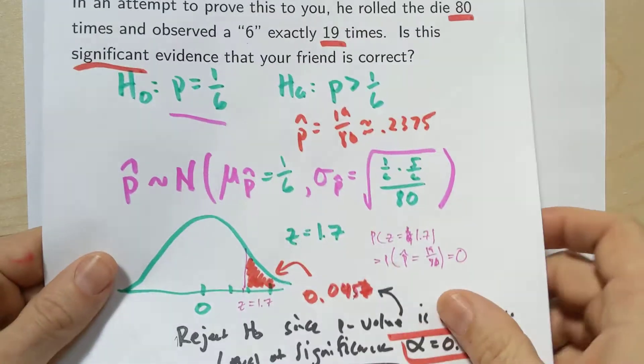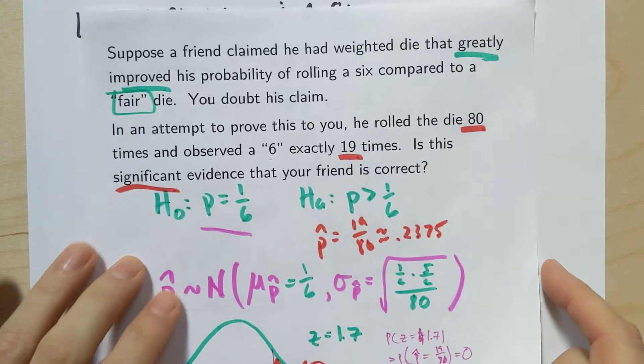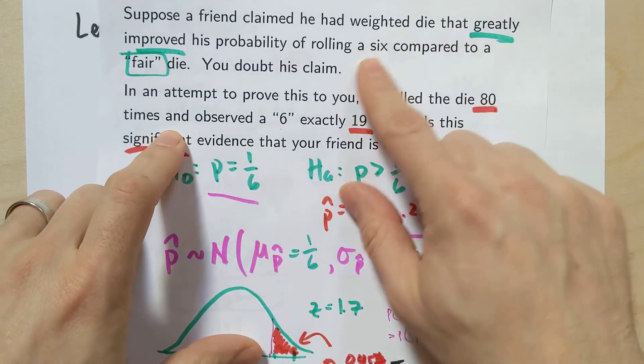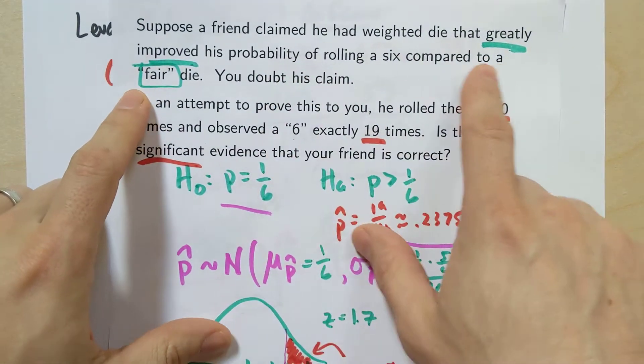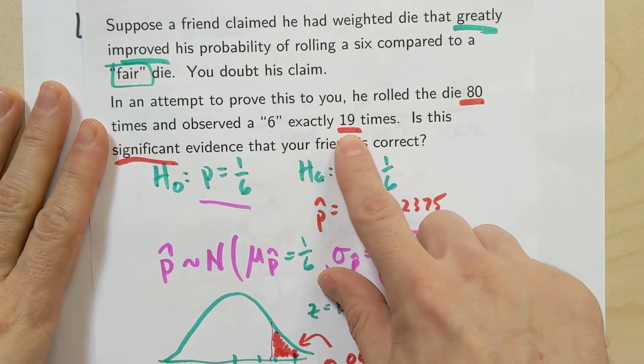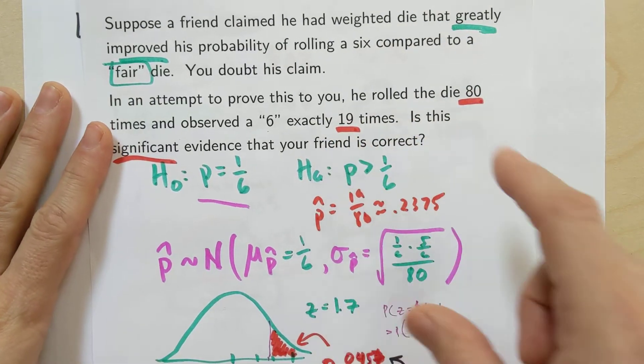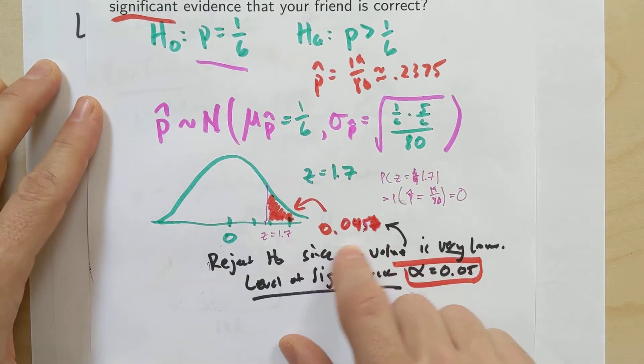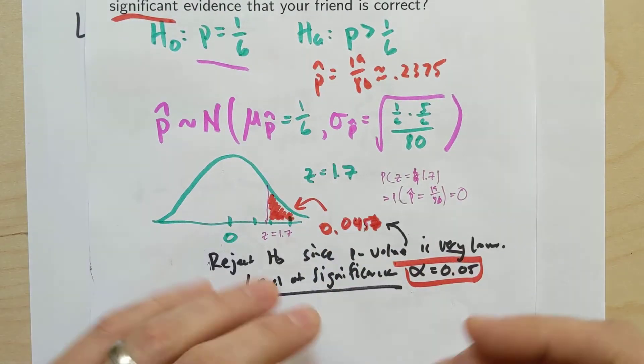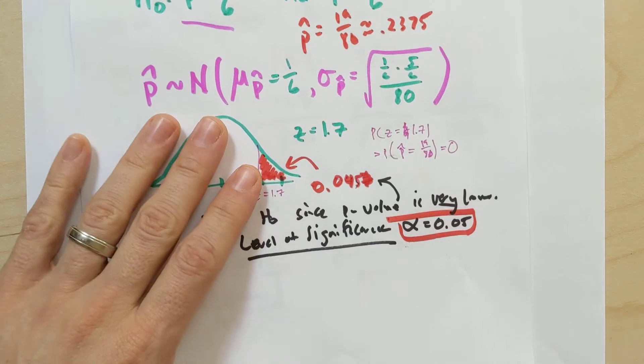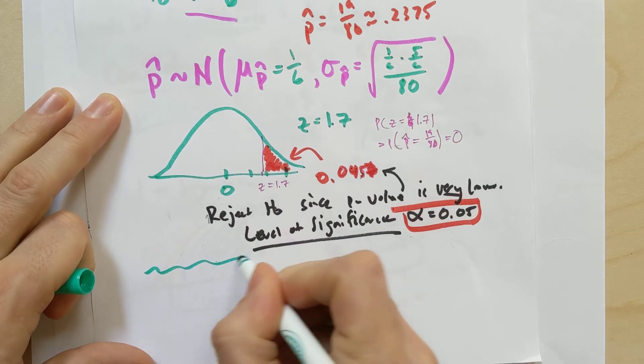Well, let's see that a little bit in an example, just to help us think about it. Let's go back to this guy again. Remember when we were, we keep going back to the same example, but that's all right. When our friend who had this die that was greatly improved his probability of rolling a six compared to a fair die. And he did 80 rolls, got a six 19 times. We ended up rejecting the middle hypothesis because our p-value was 0.046, right?